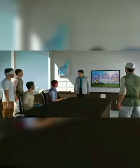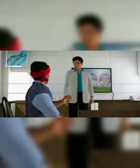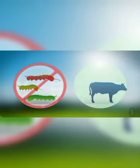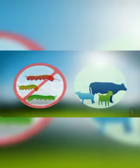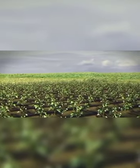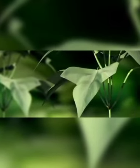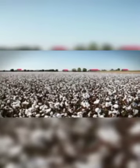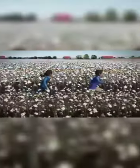Doctor, I have one more question. Can eating Bt cotton leaves affect our cattle? No, the Bt toxin specifically attacks ball worms and related insects. No other animal including cattle, sheep, goats or humans are affected by it. The plants have started attaining height with healthy flowers and fruits. Thanks to Bt seeds, there is no sign of any infestation. Fortunately, this time we have a much better harvest. All of us are so happy.